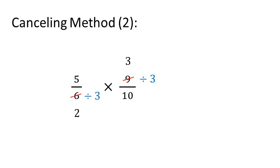We can see that 5 and 10 also have a common factor of 5, so we can divide both by 5. 5 divided by 5 becomes 1, and 10 divided by 5 becomes 2.